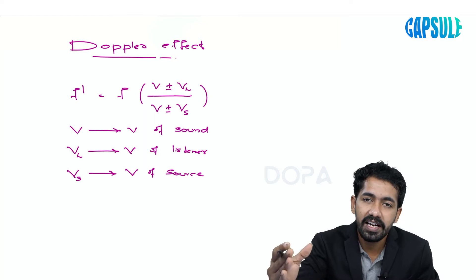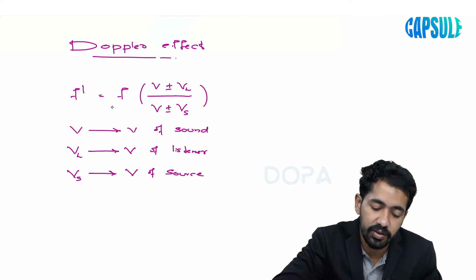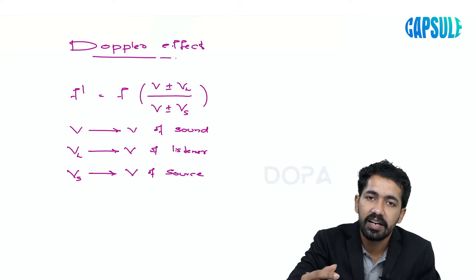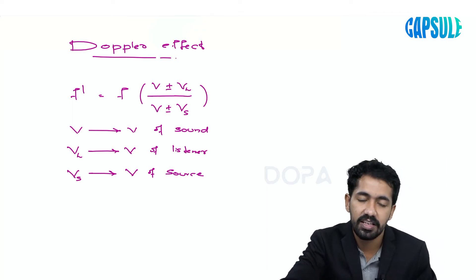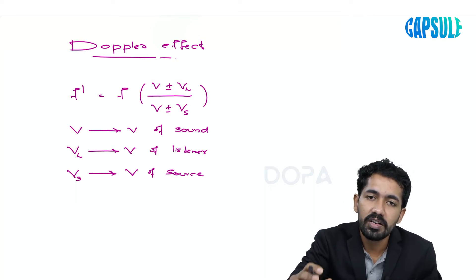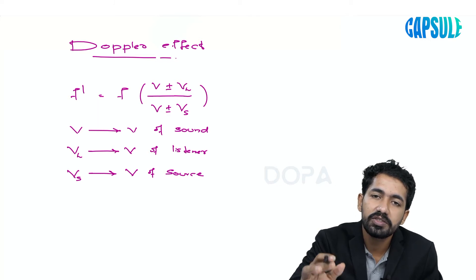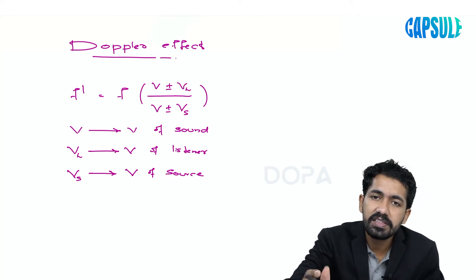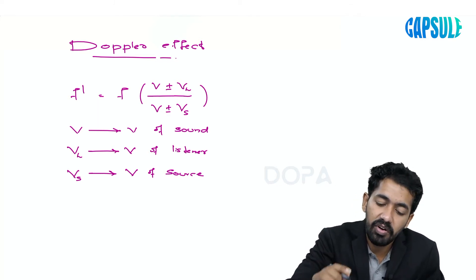Our equation for the apparent frequency is: f-dash equals f times (v plus or minus vl) divided by (v plus or minus vs), where v is the velocity of sound, vl is the velocity of the listener, and vs is the velocity of the source. There are many cases; we'll look at just one case.